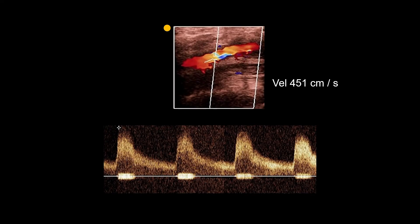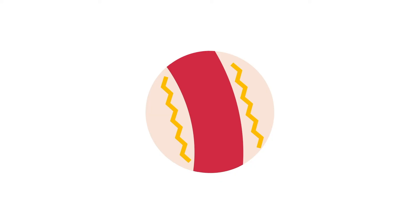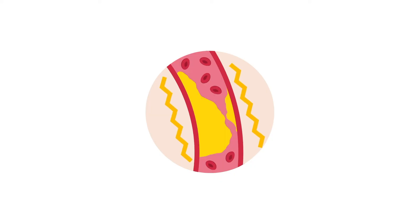Occasionally in duplex, a Doppler bruit occurs. This is from the vibration of a vessel that is severely stenotic. If this is seen but the velocities are not elevated, keep searching nearby, as the vibration is usually coming from a stenosis.